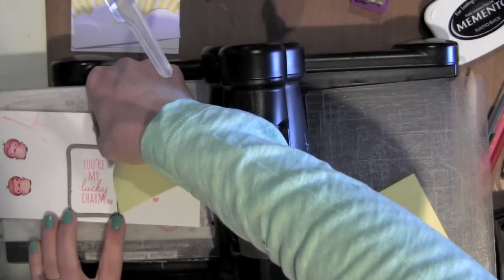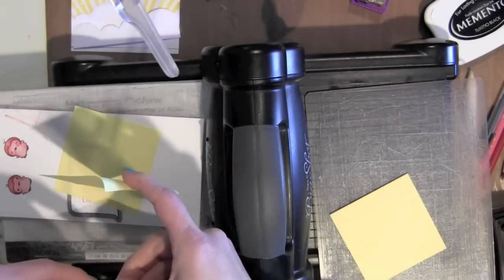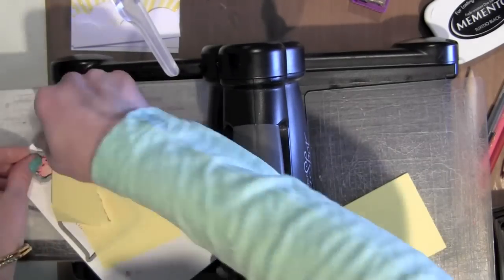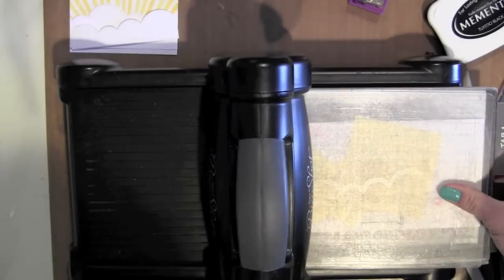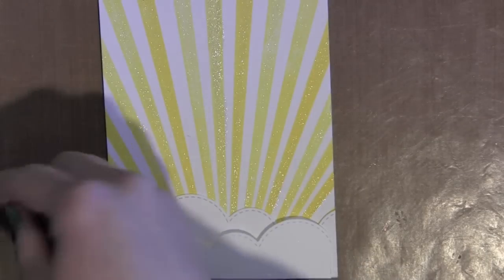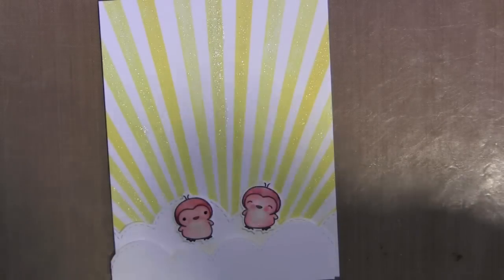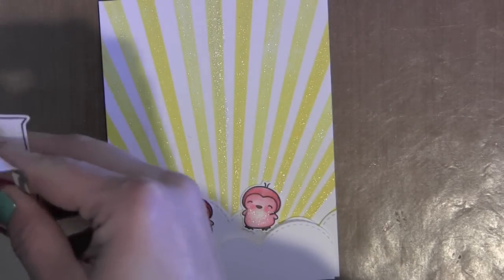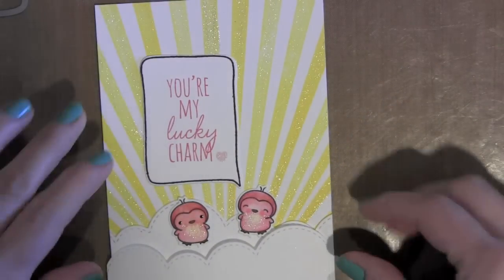And then I am going to grab the coordinating dies for this set. These are the Love Quotes dies. There is the thought bubble plus the two birds. And I am just going to use sticky notes to hold those in place and run that through my Big Shot. And I will pop all those pieces out and put my card together. So there are my cute little birds on the sunshine background.